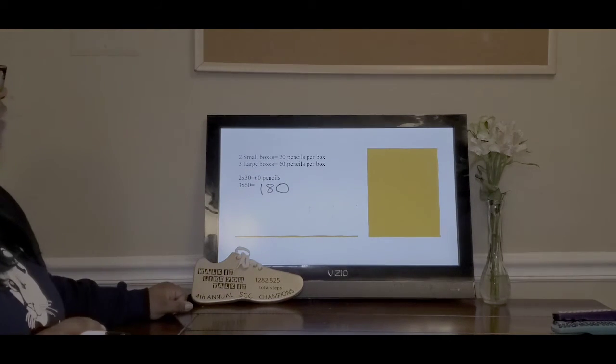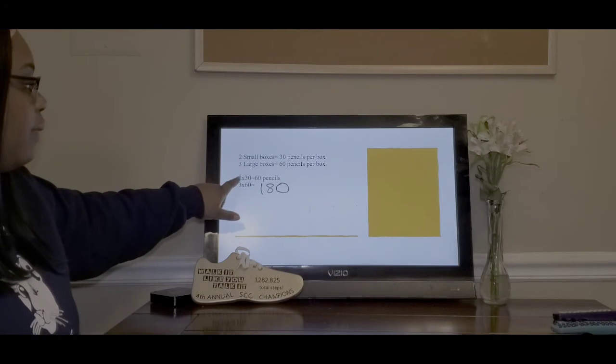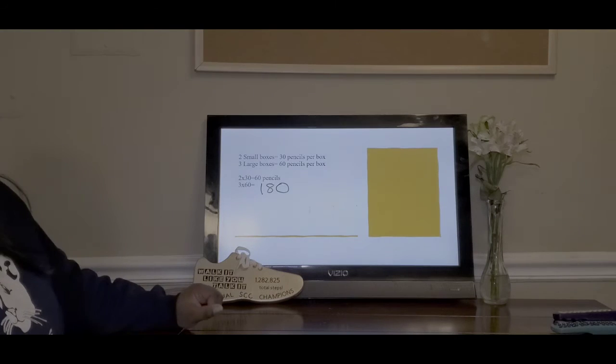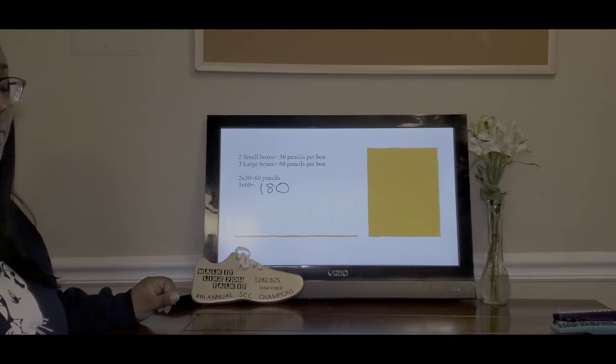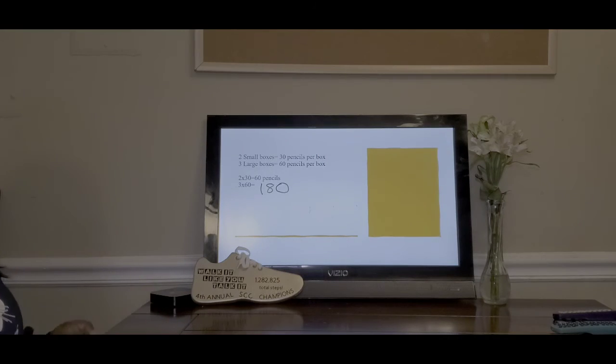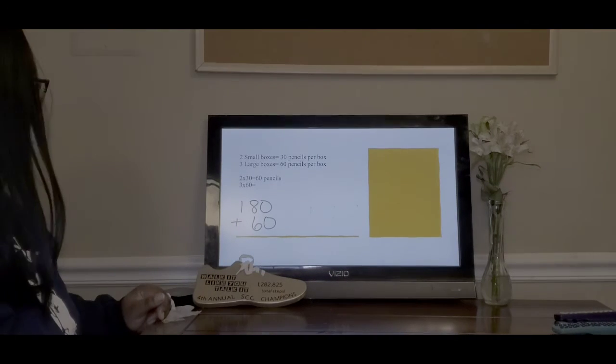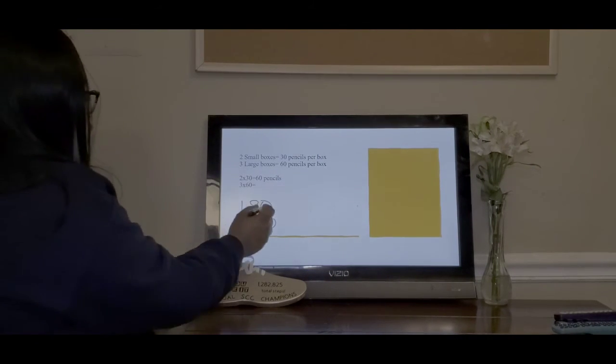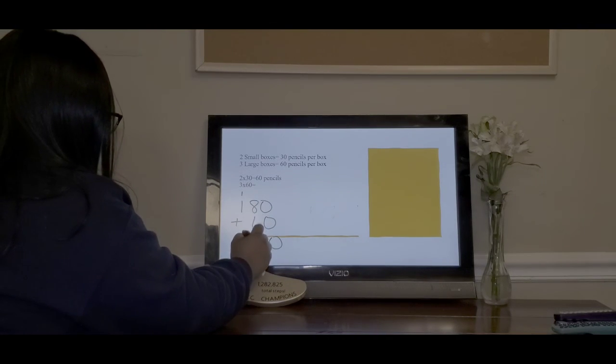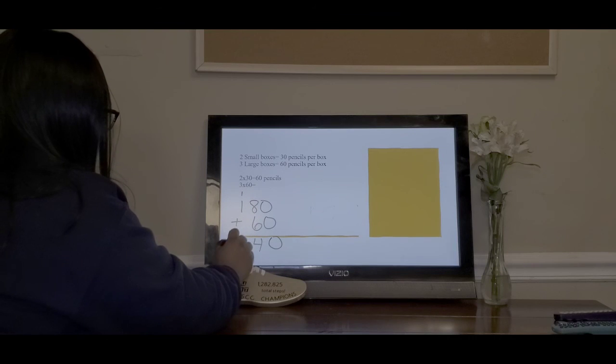So now we know that we have 60 small pencils in total and 180 large pencils in total. The next step is adding all those pencils together to get our total. I have 180 plus 60. 0 plus 0 is 0, 8 plus 6 is 14, and 1 plus 1 gives me 2.